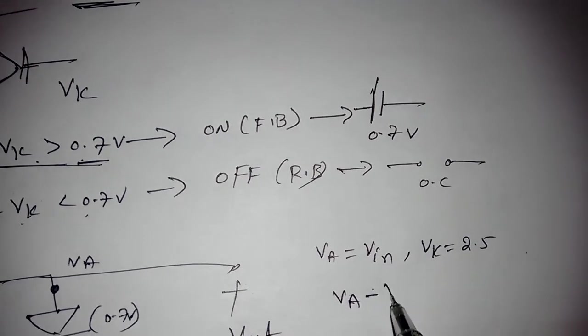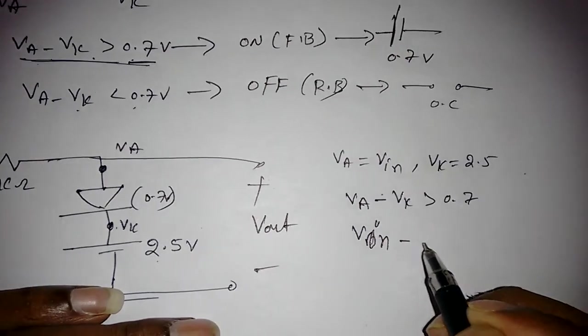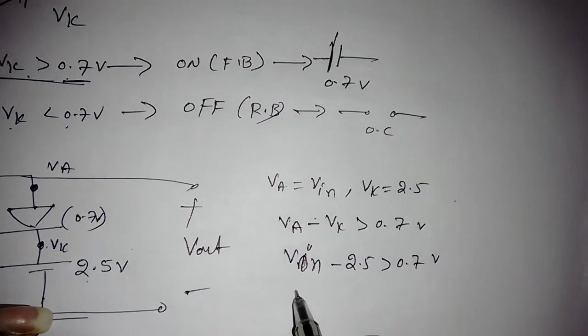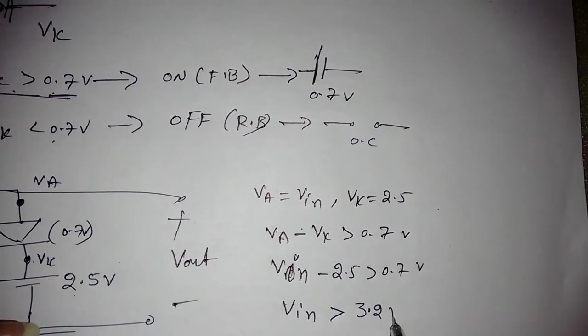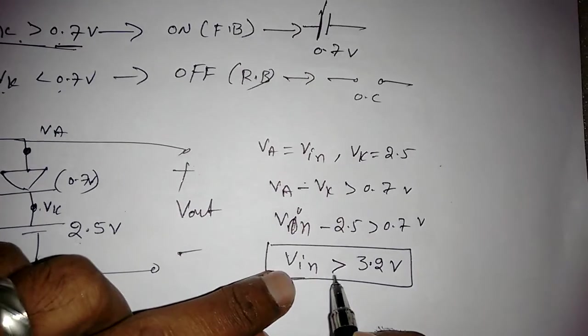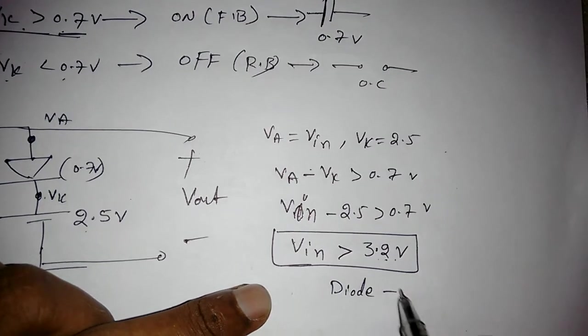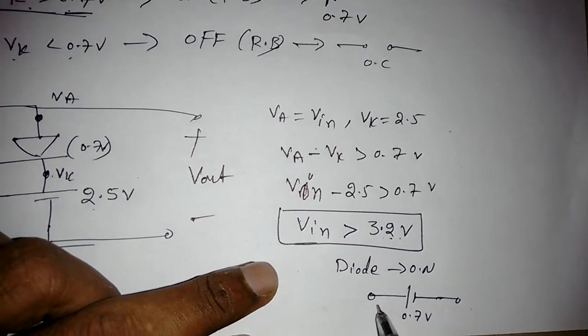For the practical diode, VA minus VK should be greater than 0.7V. VA is Vin and VK is 2.5V, so Vin minus 2.5 is greater than 0.7V, which means Vin is greater than 3.2V. Whenever Vin is greater than 3.2V, the diode will be ON and will act as a 0.7V voltage source across it.